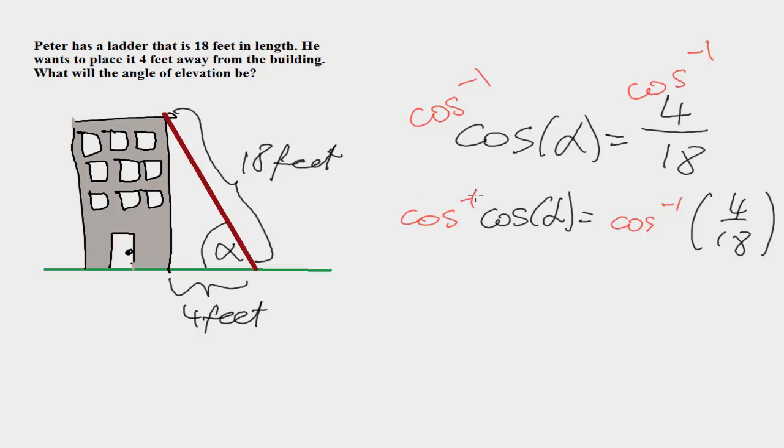That way, the inverse cosine will eliminate the cosine, bringing your alpha down.